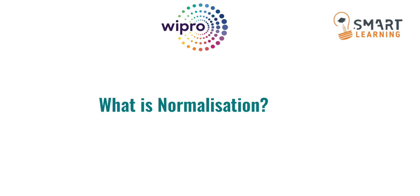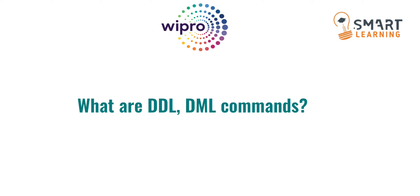The next question is: what is normalization? Basically, normalization is used to minimize the redundancy from a relation — a relation is nothing but a table. There are so many types of normalization: first normal form, second normal form, third normal form, BCNF, fifth normal form, and sixth normal form.